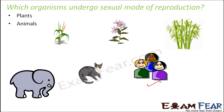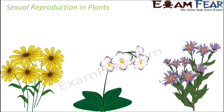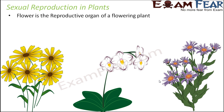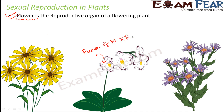Plants and animals both can undergo sexual mode of reproduction. When you talk about sexual reproduction in plants, the flower is the reproductive organ of a plant. The flower contains the male or the female reproductive parts. There are flowers which contain both the male and the female reproductive parts, and there are also certain types of flowers which contain either the male reproductive part or the female reproductive part. Inside the flower, fusion between the male and the female reproductive parts takes place.